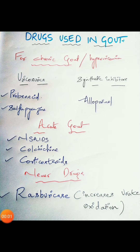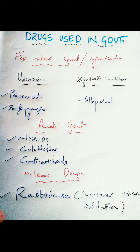Hello guys, today we will be talking about drugs used in gout. For chronic gout we have uricosurics and xanthine oxidase inhibitors. Under uricosurics we have probenecid and sulfinpyrazone, and under xanthine oxidase inhibitors we have allopurinol.